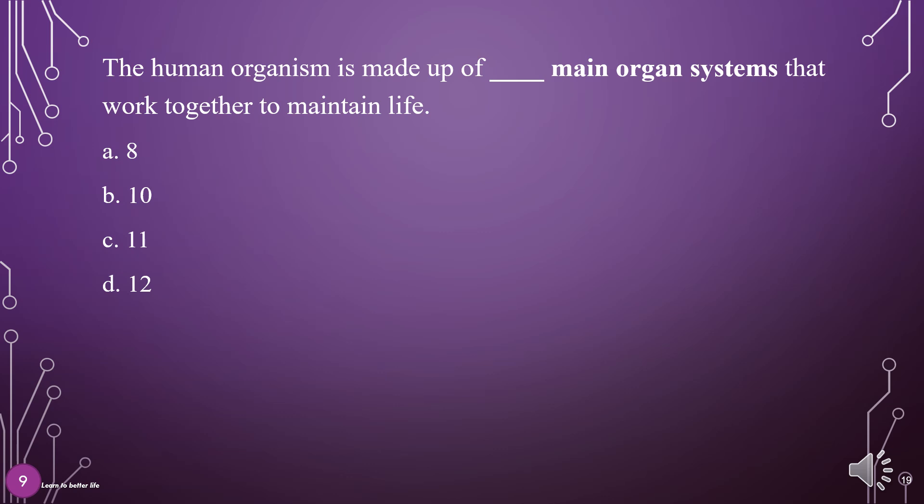The human organism is made up of how many main organ systems that work together to maintain life? A. 8, B. 10, C. 11, D. 12. The answer is C: 11.